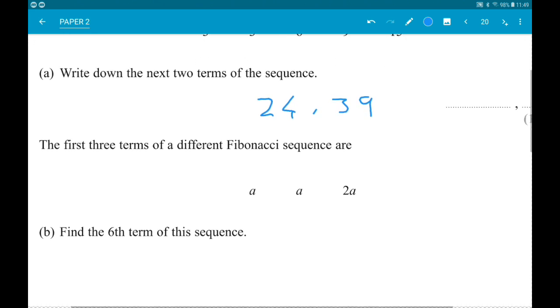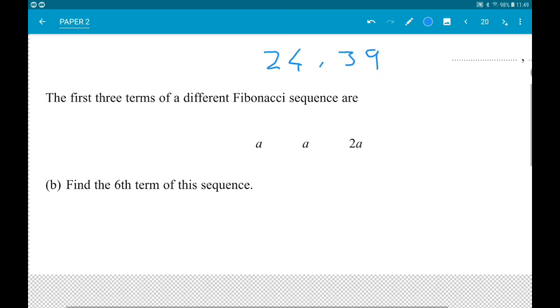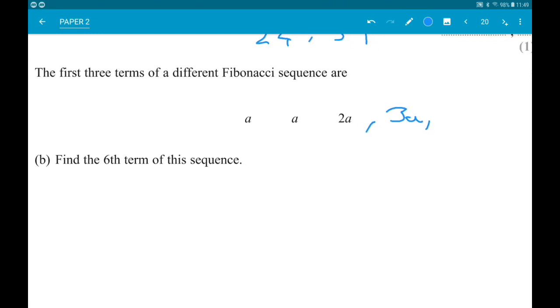Part B: The first three terms of a different Fibonacci sequence are A, A, and 2A. Find the sixth term. Our fourth one is A add 2A, so that's 3A. Our fifth one is 2A add 3A, so that's 5A. Then our sixth one is 3A add 5A, which is 8A.